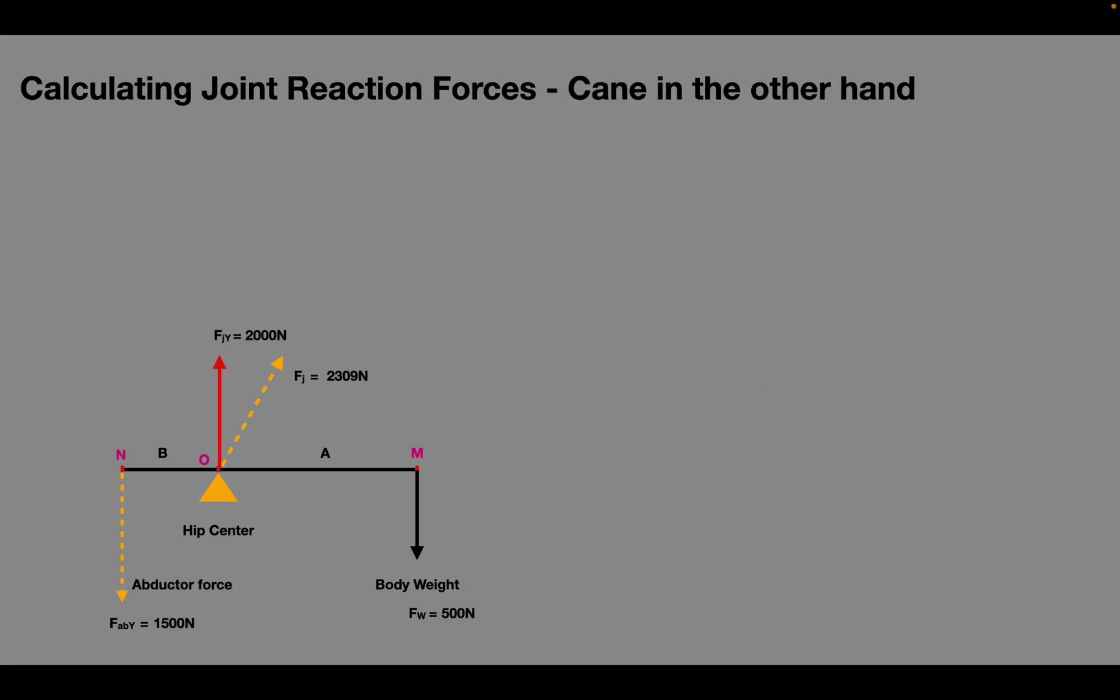Let's now see the effect of holding a cane in the other hand on the joint reaction force. If a force of about 100 N is applied through a cane held at a distance of about 50 cm then it produces a moment that opposes the moment due to the body weight like this.